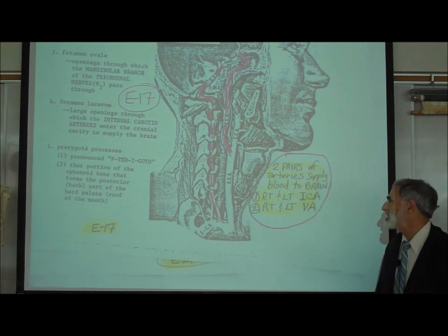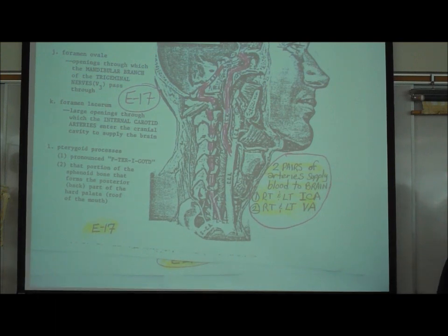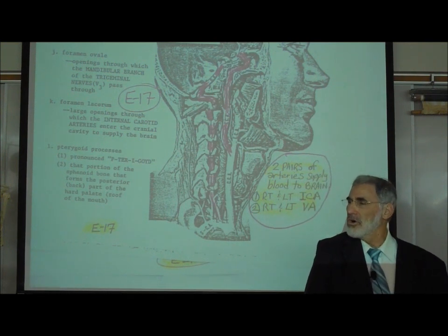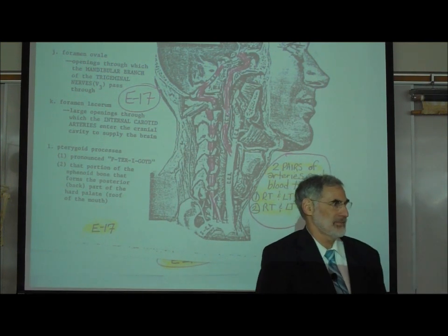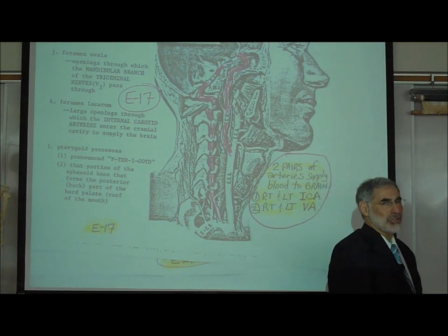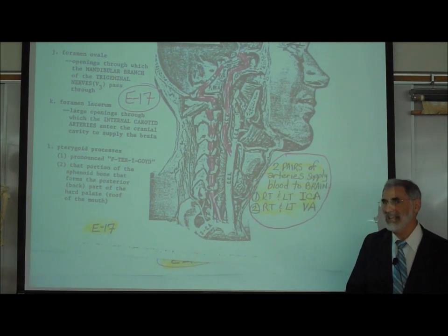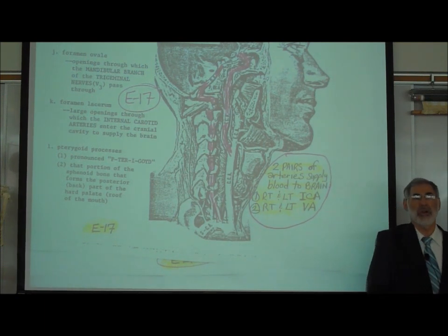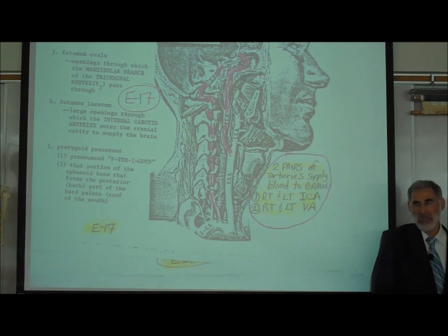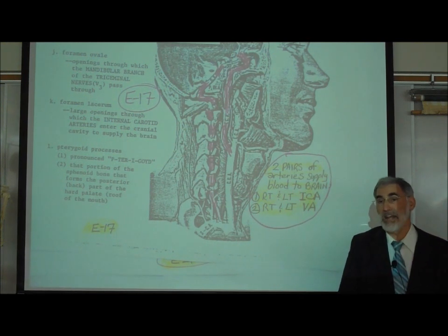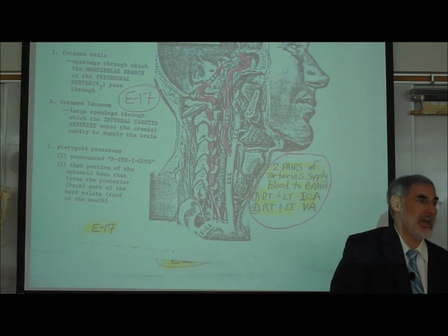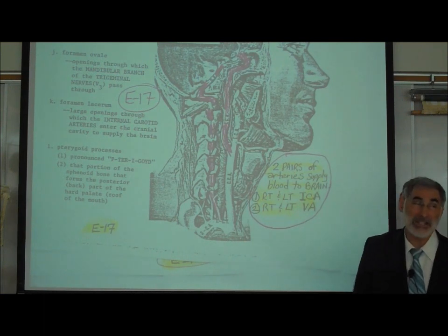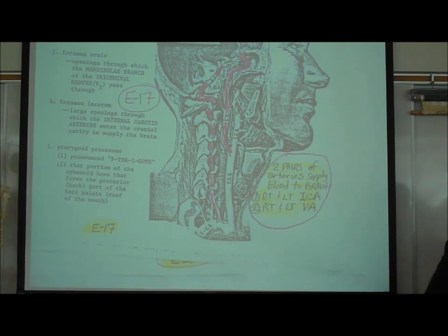There are two pairs of arteries bringing oxygenated blood to the brain: a right and left internal carotid artery and a right and left vertebral artery — four arteries total. This is important because the brain is the most important organ in the body. When the brain dies, a person can be declared brain dead regardless of whether the heart is still beating.